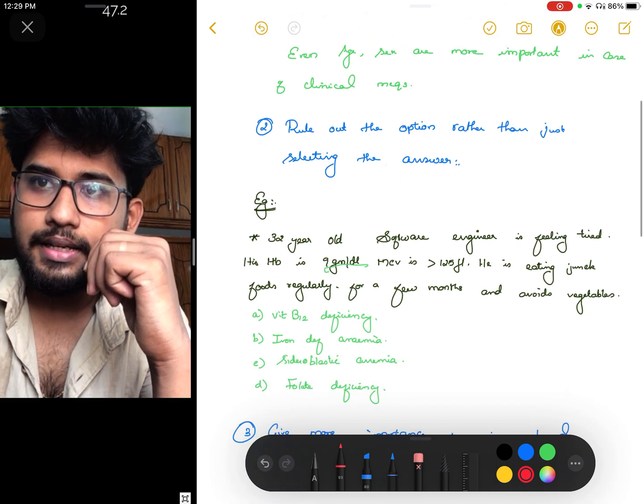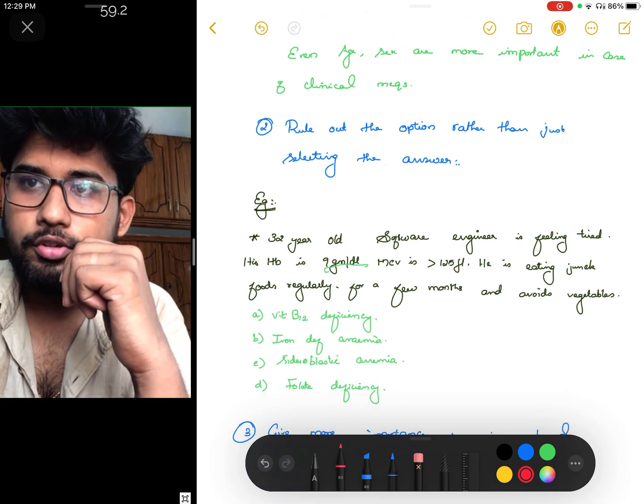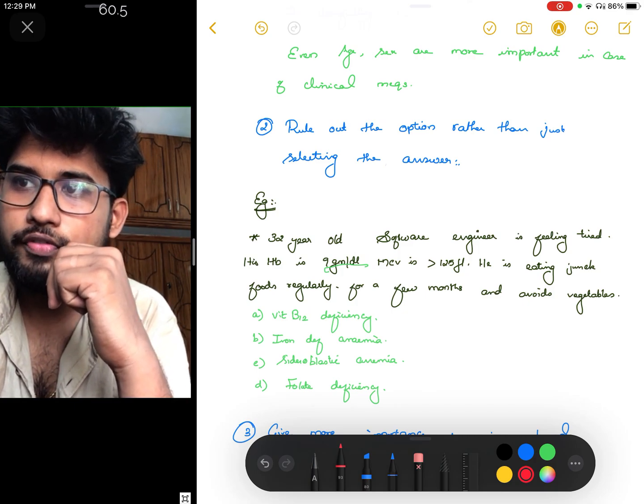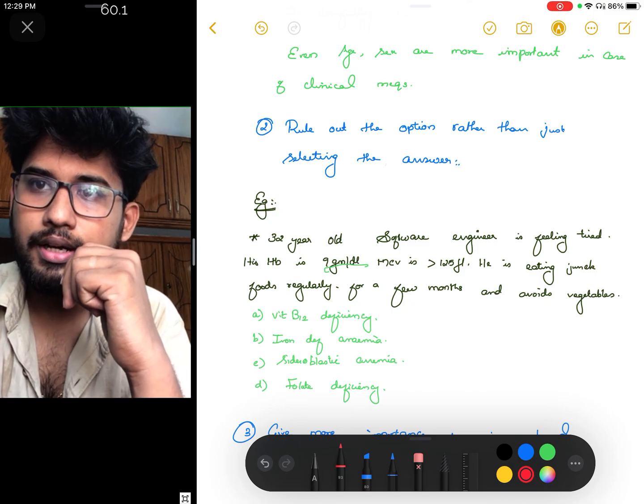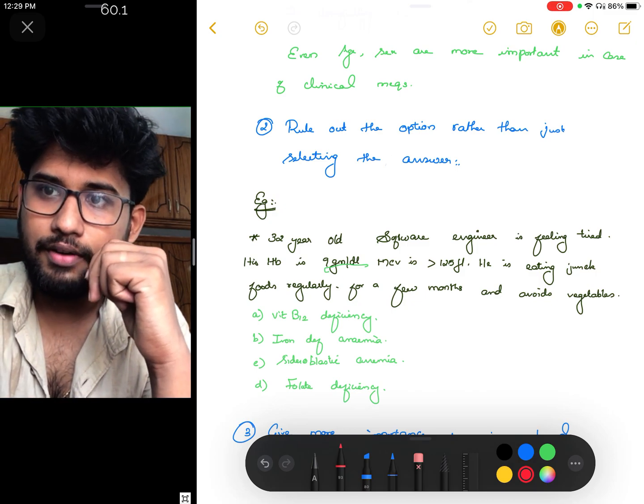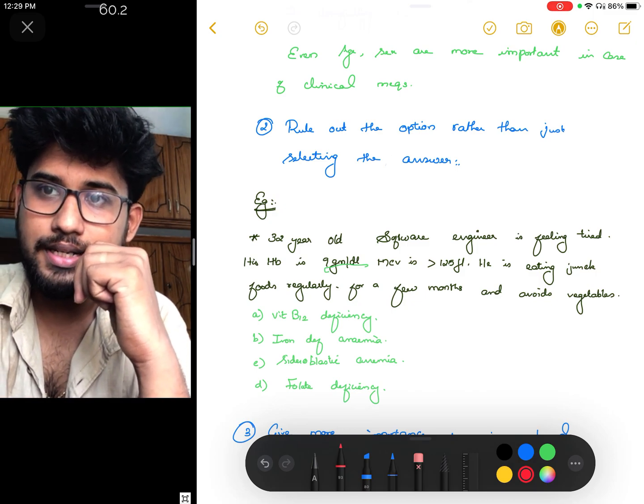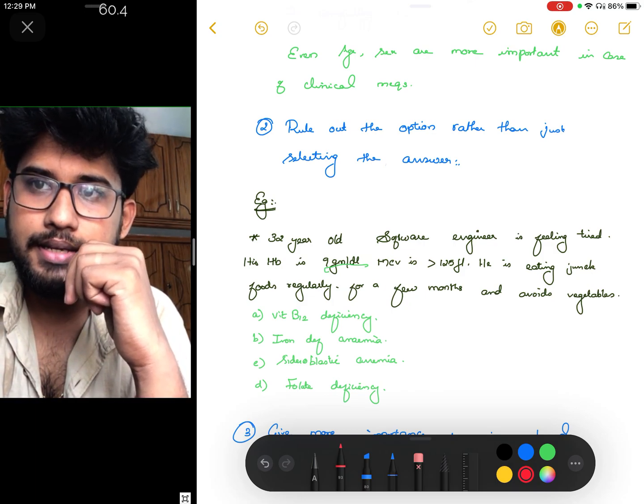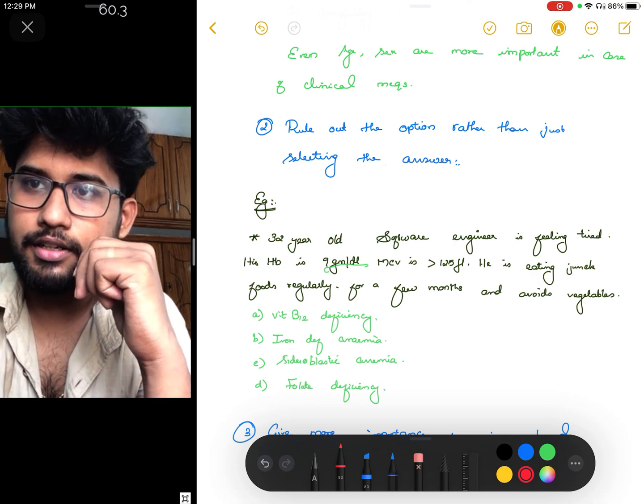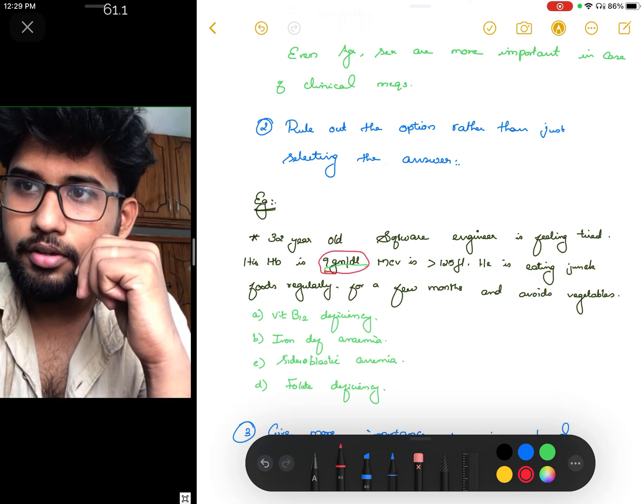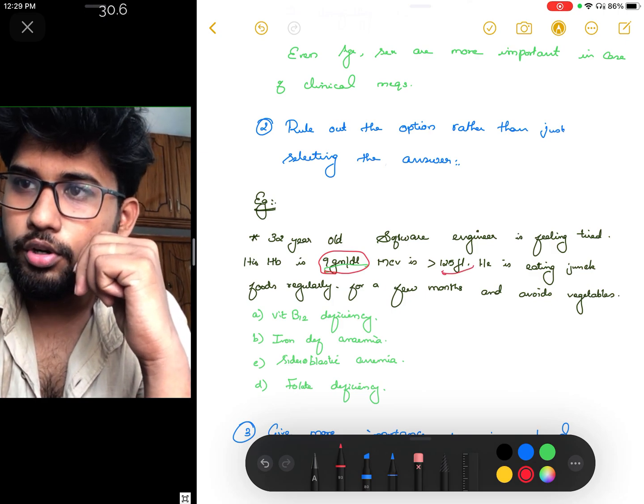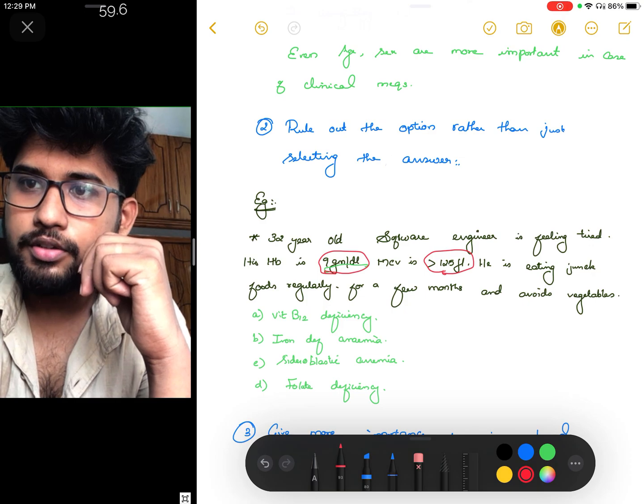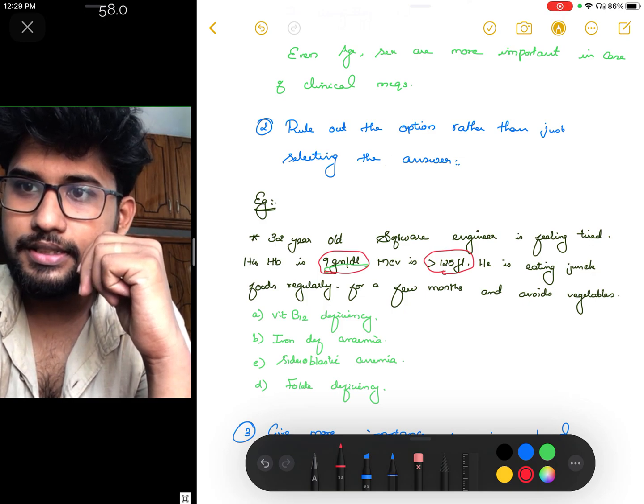Let me discuss with you a clinical-based MCQ example. A 32-year-old software engineer who is feeling tired. Feeling tired points towards some kind of anemia. On examination, his hemoglobin is 9 grams per deciliter, so he is anemic, and the MCV is more than 125 femtoliters, so it points towards macrocytic anemia.